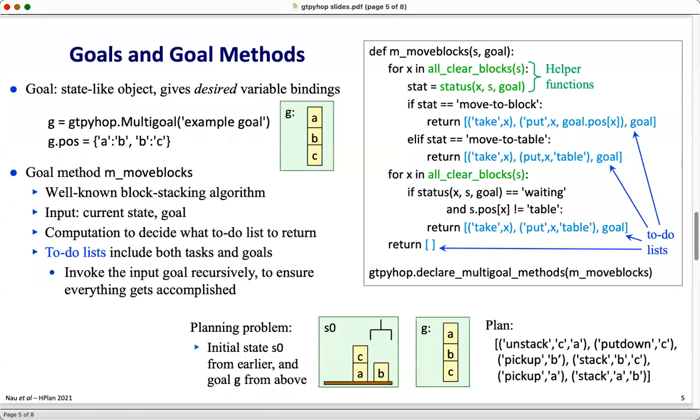A goal can be represented as an object that's similar to a state except that it gives desired state variable bindings rather than current ones. For example, here we have the goal of getting block a onto block b and block b onto block c.